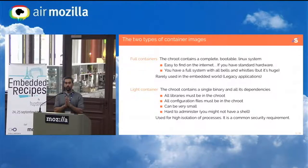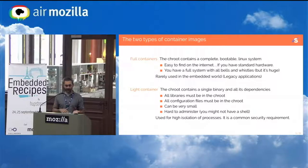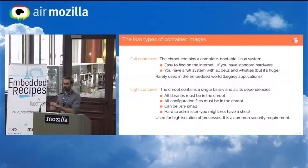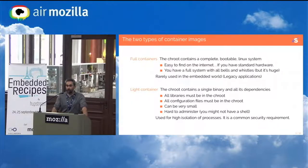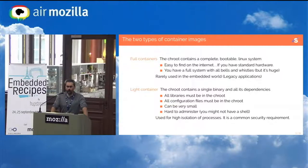We have two types of containers matching more or less the two use cases. Full containers: that's really a complete Linux in a subdirectory of your main filesystem. There are all sorts of images on the internet you can download, starting from normal distribution boot disks. The problem with those is that they're usually huge — it is a complete desktop Linux. In the embedded world, we very rarely put a complete distribution in an embedded product.